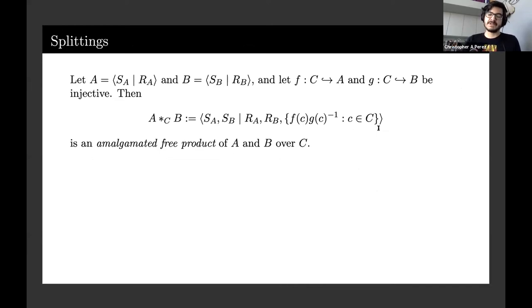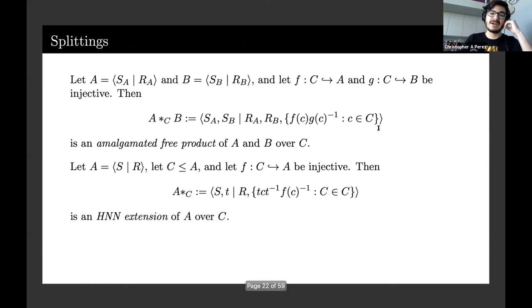There are two basic splittings that all other splittings are based off of. The first one is the amalgamated free product and the other is the HNN extension. You're all familiar with the amalgamated free product - this is the van Kampen's theorem thing where if you take two spaces and attach them along a subspace, the fundamental group is an amalgamated free product of those two groups over the group of the subspace. The HNN extension is similar where we take a subspace and attach it to another copy of itself using a torus, which is why we get this extra generator T for the fundamental group. HNN extensions are like adding handles, amalgamated free products are like gluing two spaces together.